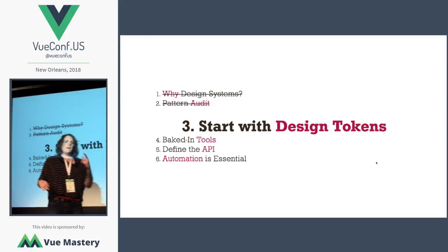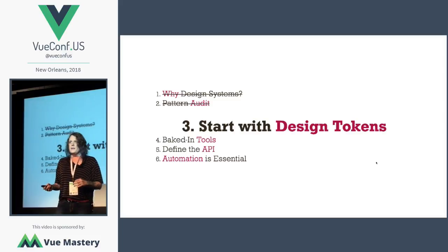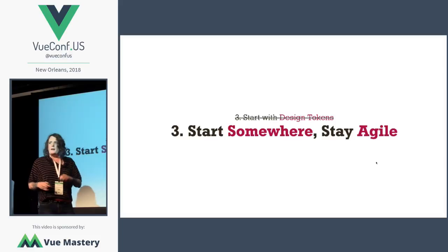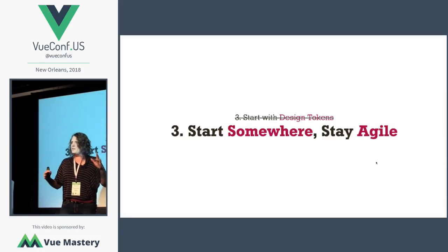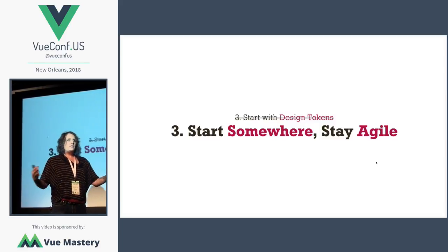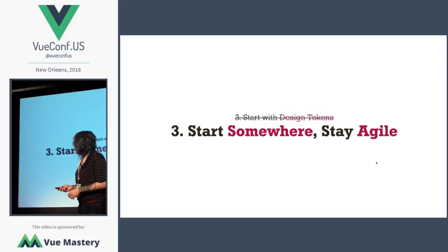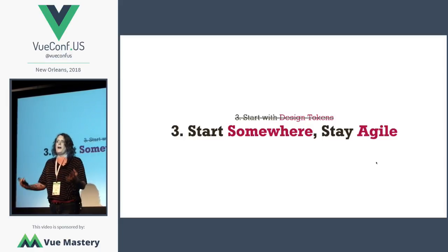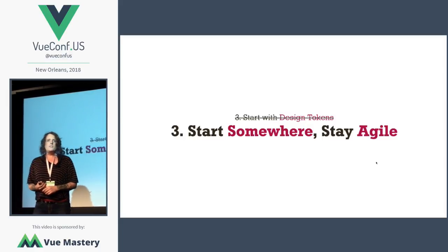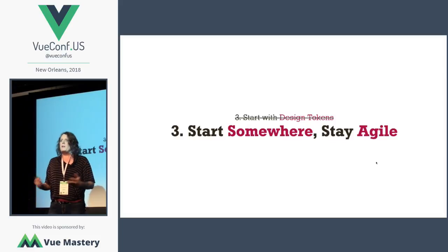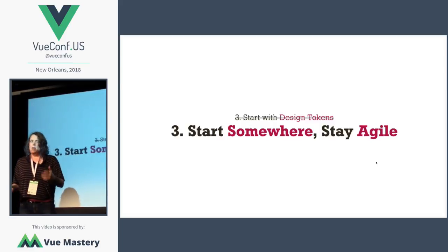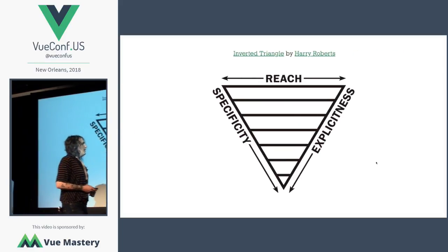Design tokens. This is a term the Lightning Design System came up with and it's been catching on. Basically it's the abstractions — colors exist outside of their use, so colors as an abstraction would be a design token. Really, start anywhere. For our first clients that we were giving style guides, we just gave them colors. That was all we documented because we figured out how to document that well first, and then we slowly started adding in more and more elements.